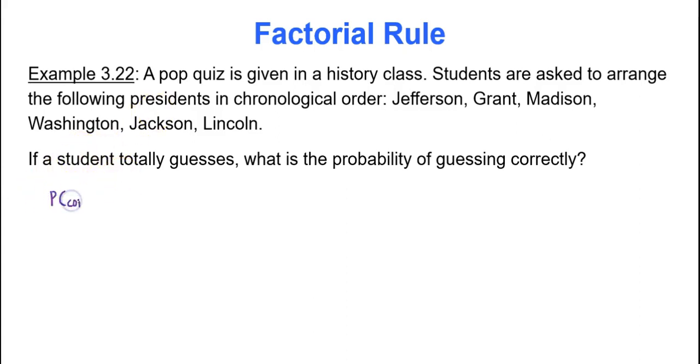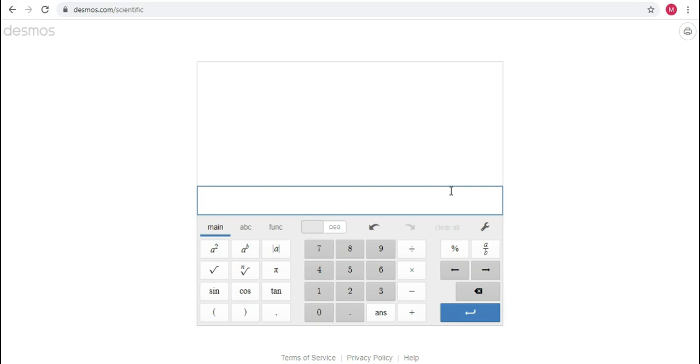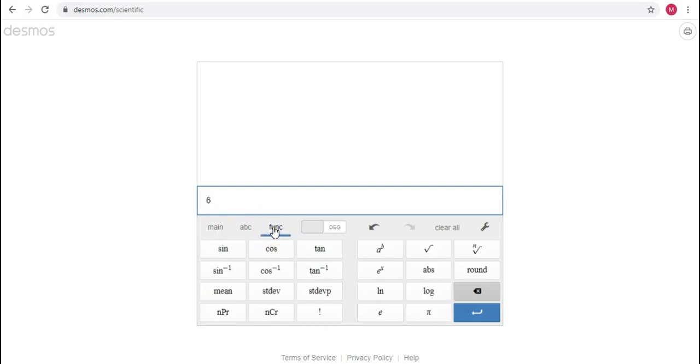So the probability the student is correct is there's only one correct answer out of how many possible answers. How many ways to arrange those six presidents? Well, there's six presidents and they're all distinct, so it's simply just six factorial. Six times five times four times three times two times one. We're going to use a scientific calculator to do this calculation for us. So I'm going to use a Desmos scientific calculator. It's an online free calculator. But if you go to function FUNC, you type in six, click the exclamation mark. It does the calculation for you telling you six factorial is equal to 720.